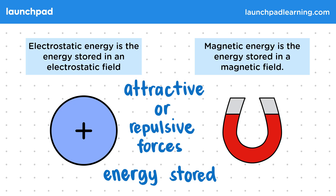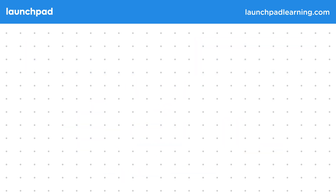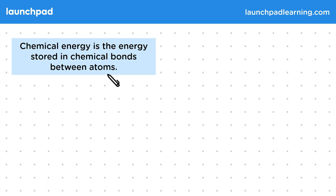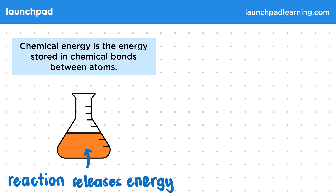We'll be learning more about electric and magnetic fields elsewhere, so don't worry if these definitions seem a bit complicated right now. Chemical energy is the energy stored in chemical bonds between atoms. You'll learn more about this in chemistry, but there is energy stored in chemical bonds that can be released through chemical reactions. This is the type of energy that will be stored in fuels, batteries, food and our bodies.